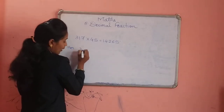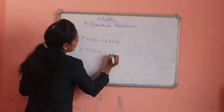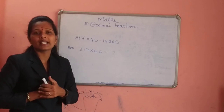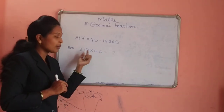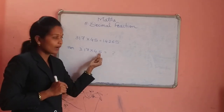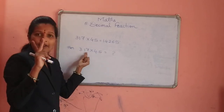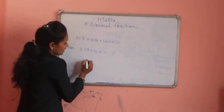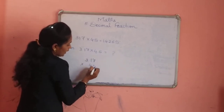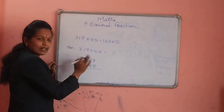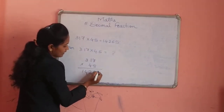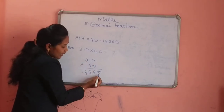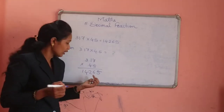In multiplication, whenever decimal points are there, in addition and subtraction we directly write the decimal point below the decimal point, but in multiplication we have to count the decimal places in both numbers. In 4.5 there is 1 decimal digit, and in 3.17 there are 2 decimal digits — so 1 plus 2 gives 3 decimal places. The numbers are the same: 317 times 45 gives 14,265. Now remove 3 places from the answer and give the decimal point: 14.265.